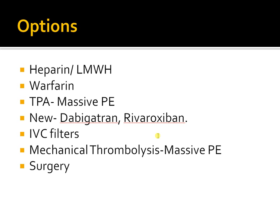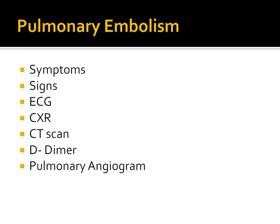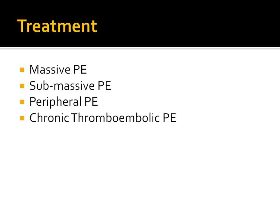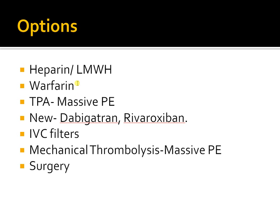In summary: remember the signs and symptoms of pulmonary embolism, salient features on examination, ECG findings, and the utility of CT scan. Remember the types — massive PE, submassive PE, and peripheral PE. Chronic thromboembolic PE is rare. For treatment options: warfarin was the standard for 60 years, but now two new drugs — dabigatran and rivaroxaban — are available. IVC filter is for people who cannot take these medications, and TPA plus mechanical thrombolysis are for massive PE. Hope this helps — I would love to hear your feedback.